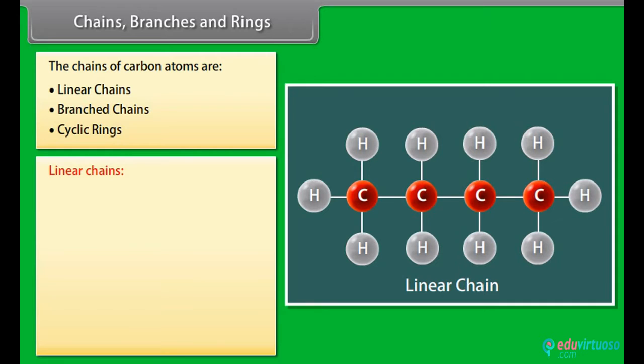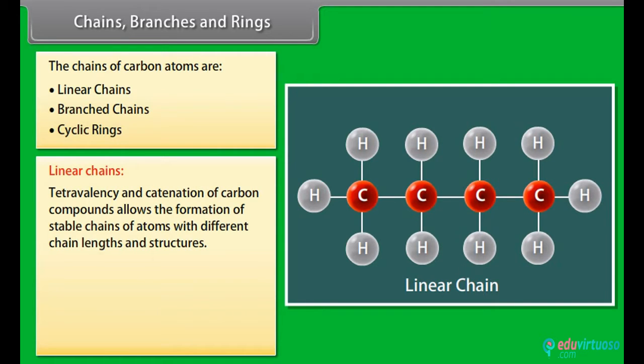Linear chains. Tetravalency and catenation of carbon compounds allows the formation of stable chains of atoms with different chain lengths and structures.